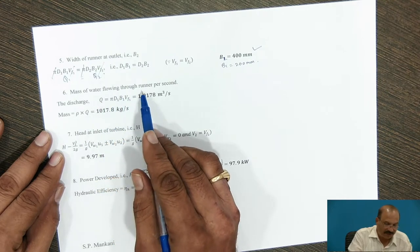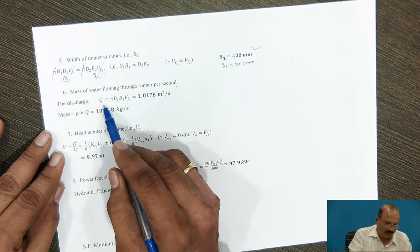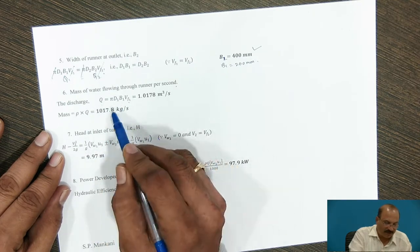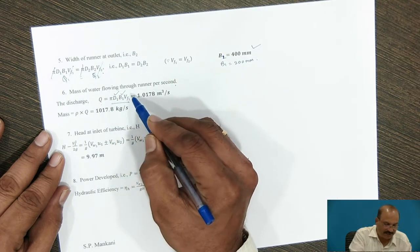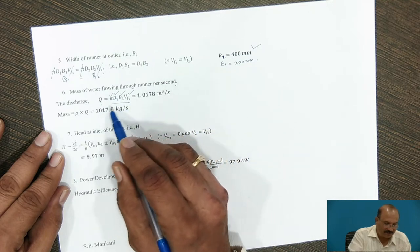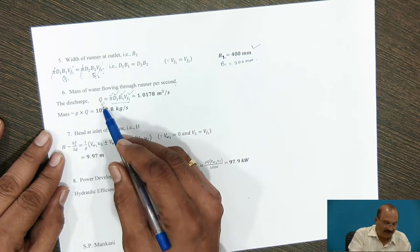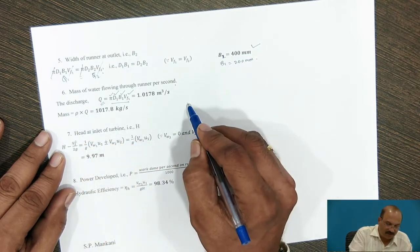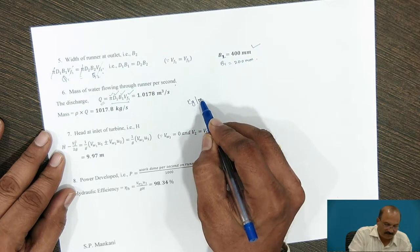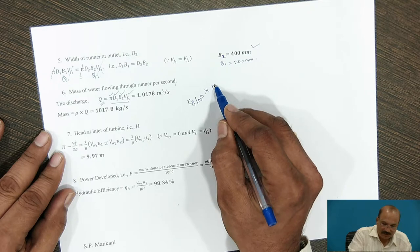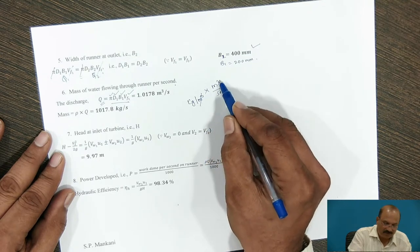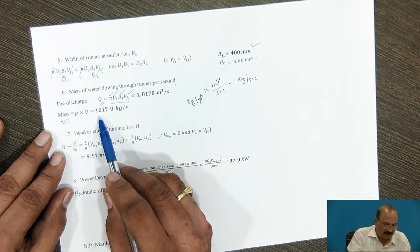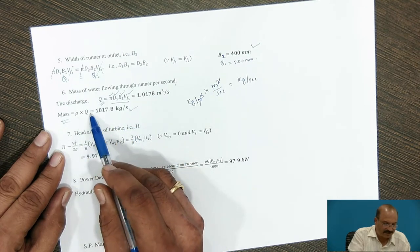For the mass of water flowing through the runner per second: Q = π D1 B1 Vf1. With known values of D1, B1, and Vf1, we calculate Q, then mass = ρ × Q. With ρ = 1000 kg/m³, the mass flow rate is 1017.8 kg/s.